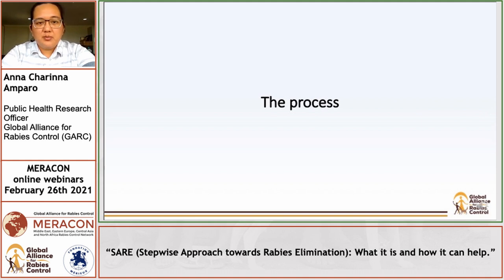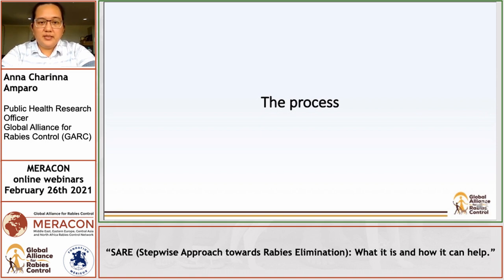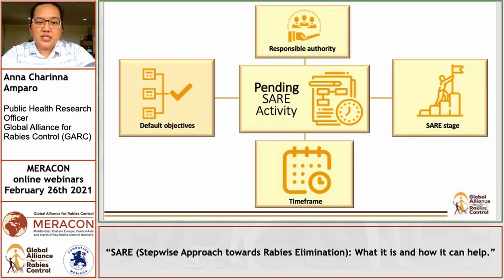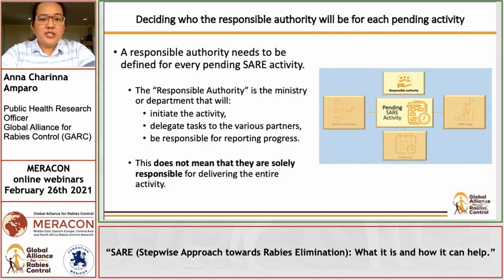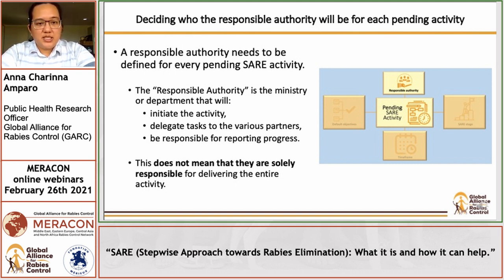For the next few slides, we'll be talking about the process of refining this generic work plan and developing your own country-specific work plan. For each pending activity identified during the SARA assessment, we need to define the responsible authority, customize objectives from the default ones provided in the generic work plan, and set a timeframe based on the SARA stage. A responsible authority needs to be identified for each pending activity — this is the ministry or department that will initiate the activity, delegate tasks to various partners, and be responsible for reporting progress. This does not mean they are solely responsible for delivering the entire activity.